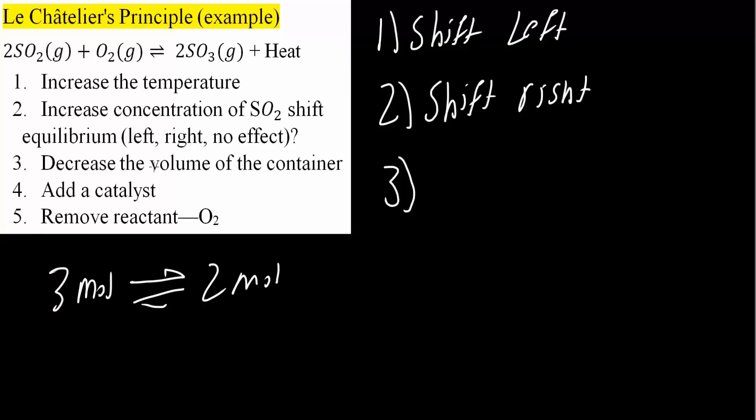If you decrease the volume of the container, it's going to shift to the number that's lower. It's going to shift to two. So it's going to shift right. Had this problem been the other way around, like two moles here, and then three moles here, you would go left.